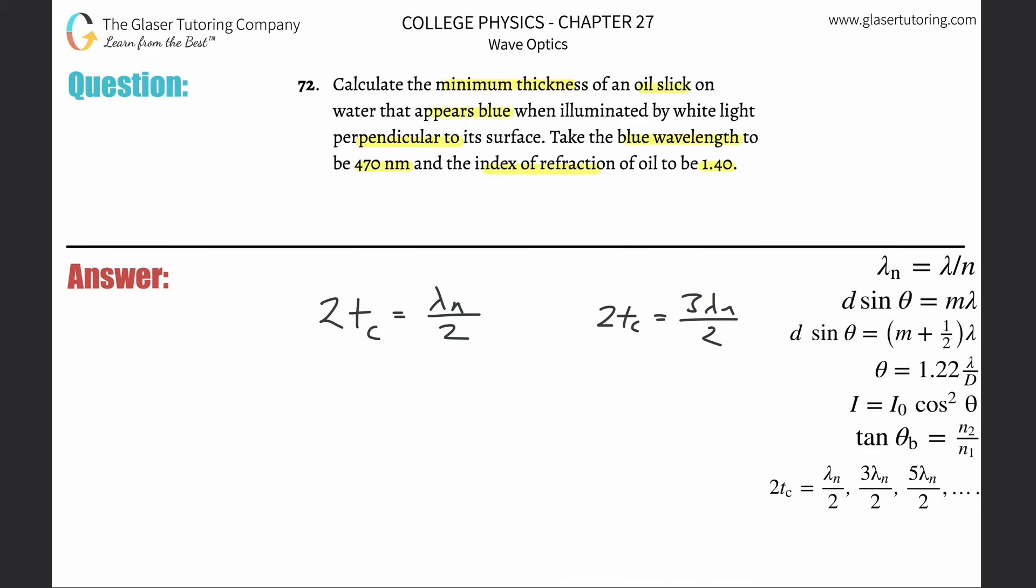Now in order to solve for that, all we simply have to do is multiply the two on out. So this would be wavelength n over four. Now this represents the wavelength in the oil slick.